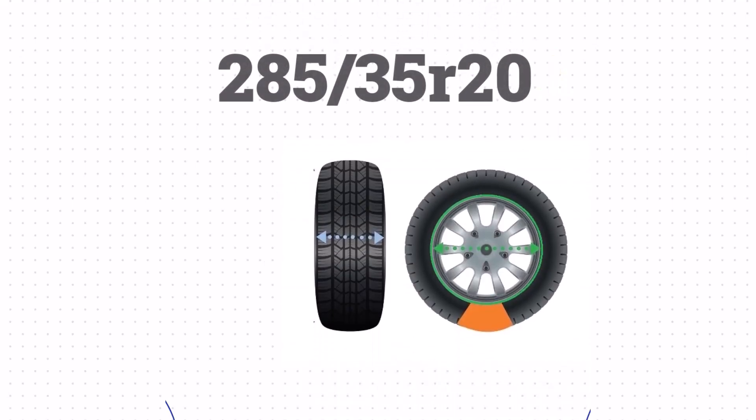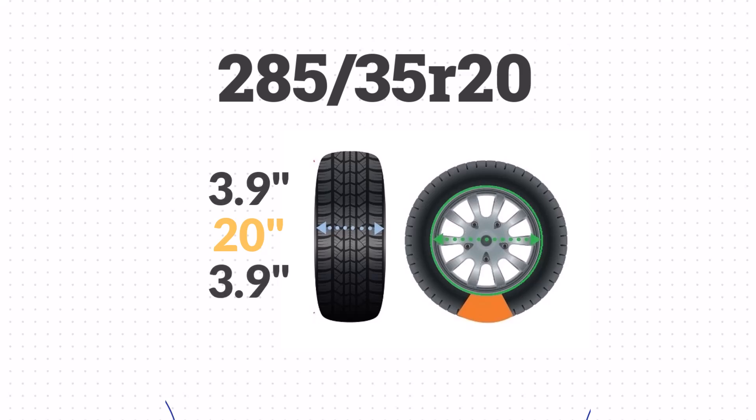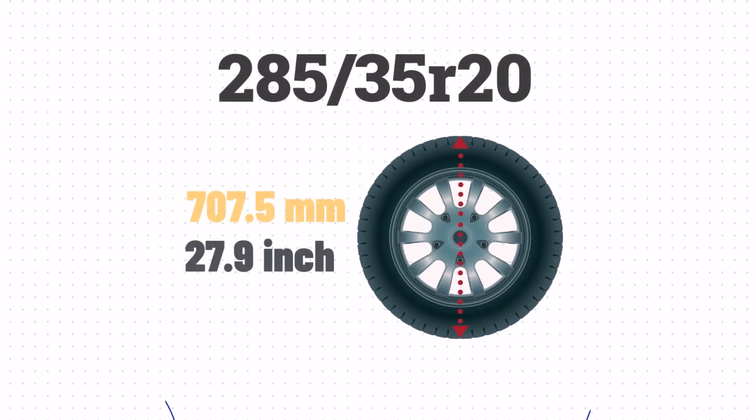Now that we've got the width, sidewall size, and wheel size, we can take all that together and calculate the height of the tyre. We'll take the sidewall size, add the wheel size, and then add the sidewall size one more time. This gives us a height of approximately 27.9 inches.